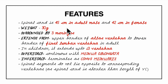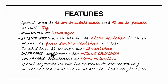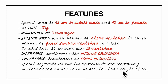To summarize the important features of the spinal cord: it is 45 cm in an adult male and 42 cm in females; weight is 30 grams; it is surrounded by three meninges; it extends from the upper border of the atlas vertebra to the lower border of the first lumbar vertebra; in children it extends up to L3; superiorly it is continuous with the medulla oblongata and inferiorly terminates as the conus medullaris; spinal segments do not correspond to vertebral levels as the spinal cord is shorter than the vertebral column.